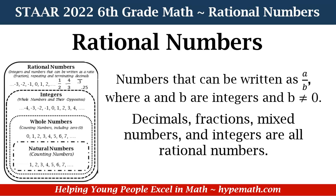Let's look at our graphic organizer. We see that overarching are rational numbers, and then we have it divided up. Let's start with the smallest box, which is natural numbers. Those are the counting numbers: 1, 2, 3, 4, all the way up to infinity — those are called natural numbers.